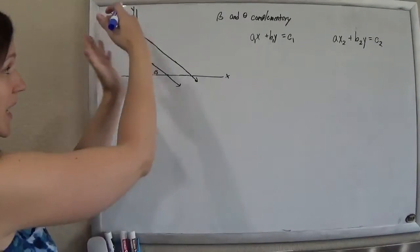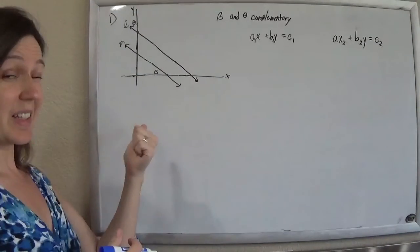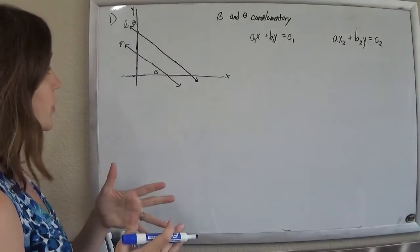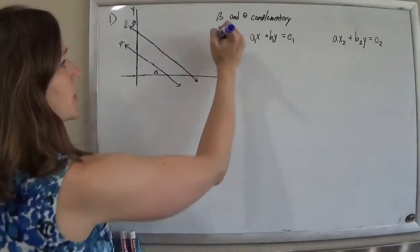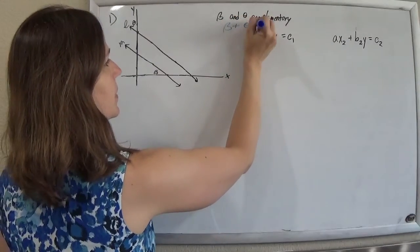All right, so they've drawn this so it kind of looks like those lines are parallel, but they didn't actually tell us, so we're not allowed to assume. But they did give us a hint that b and theta are complementary, which means that b plus theta should be 90.